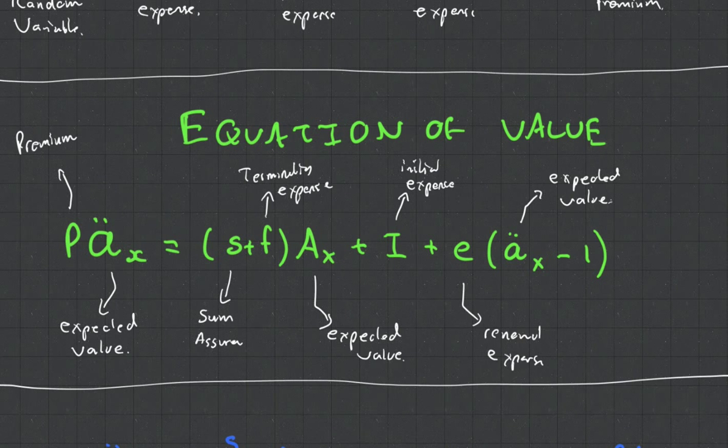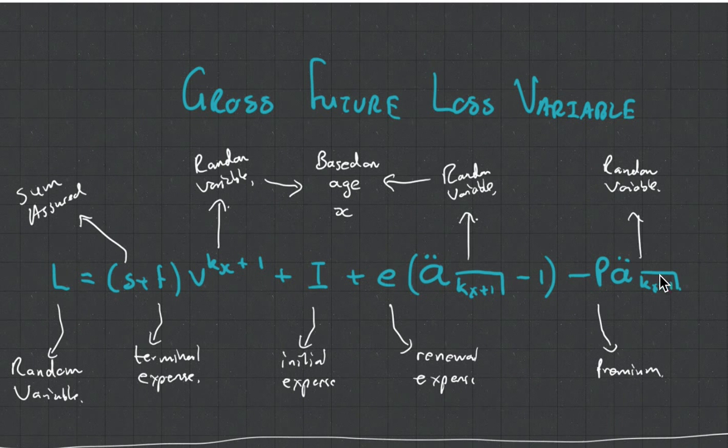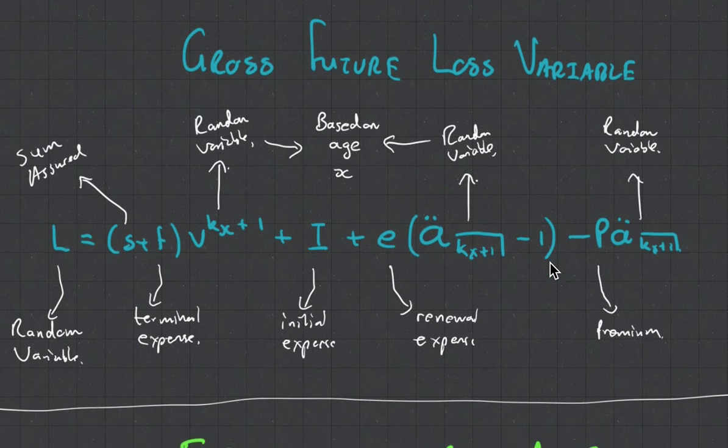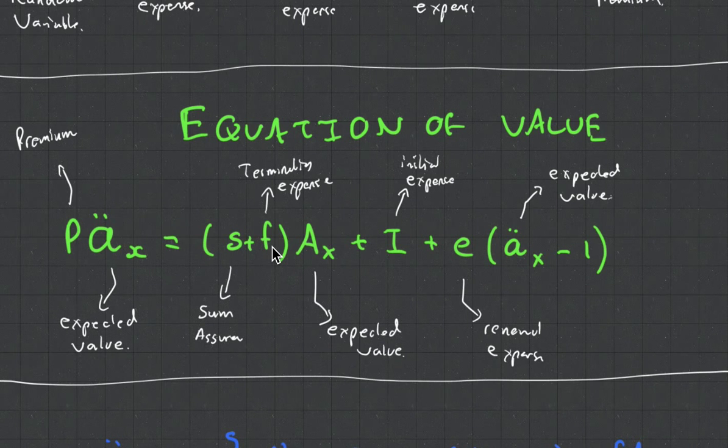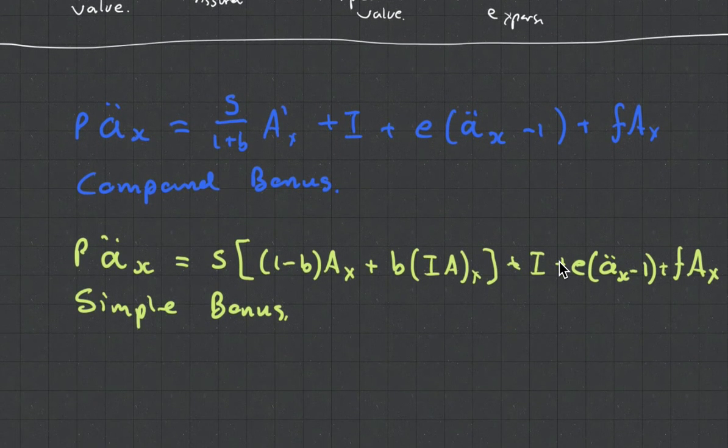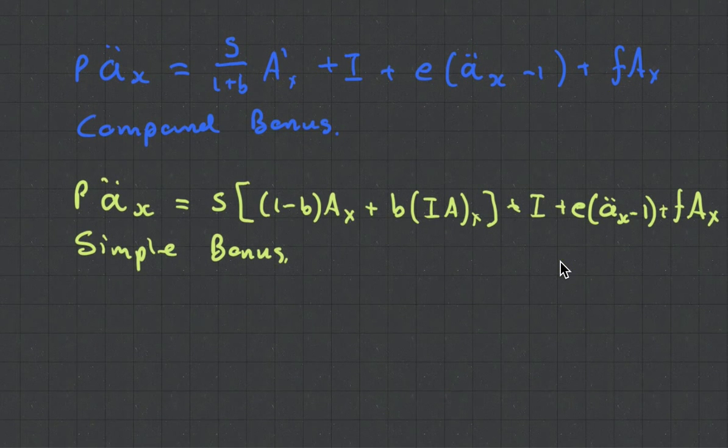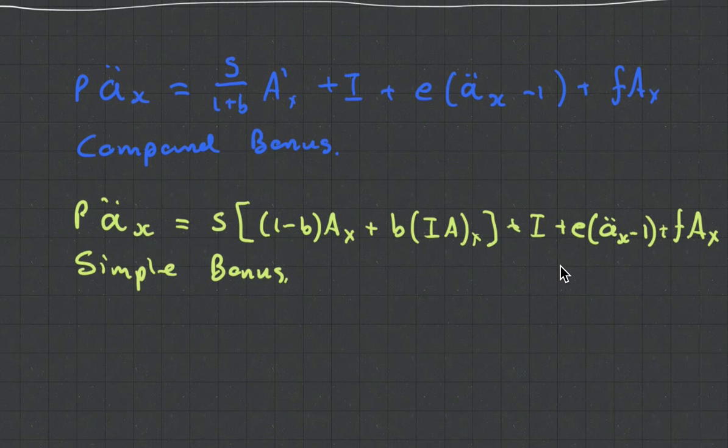What we've done is we've made, remember, equation of value is that equation with the expected value set to zero. You can see there's our terminal expense, our initial and our renewal. And this is how you deal with expenses when it comes to bonuses. Again, it's not really difficult to add on expenses. It's more about just being careful and it makes it look a little bit difficult, but it's not actually that bad.